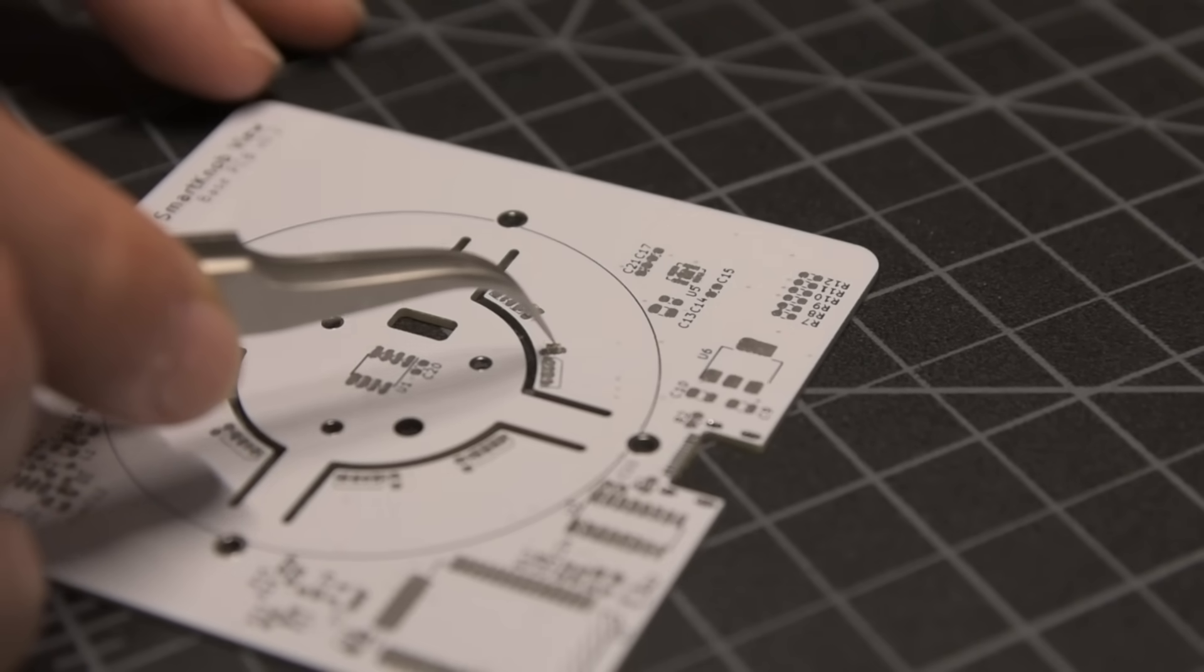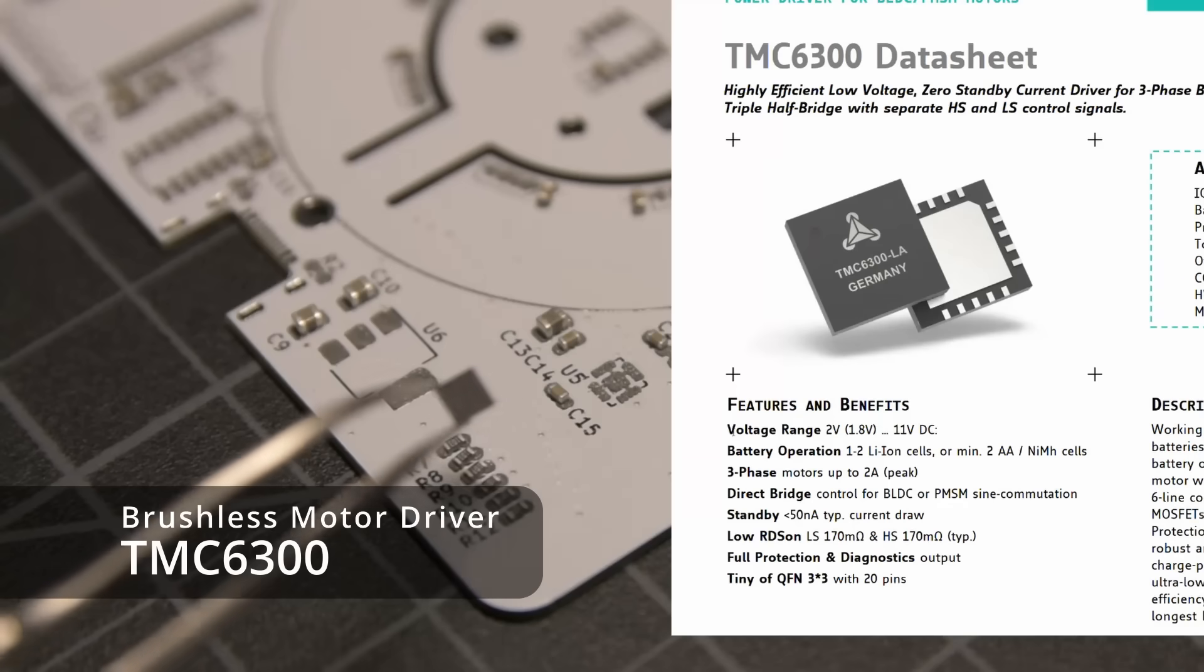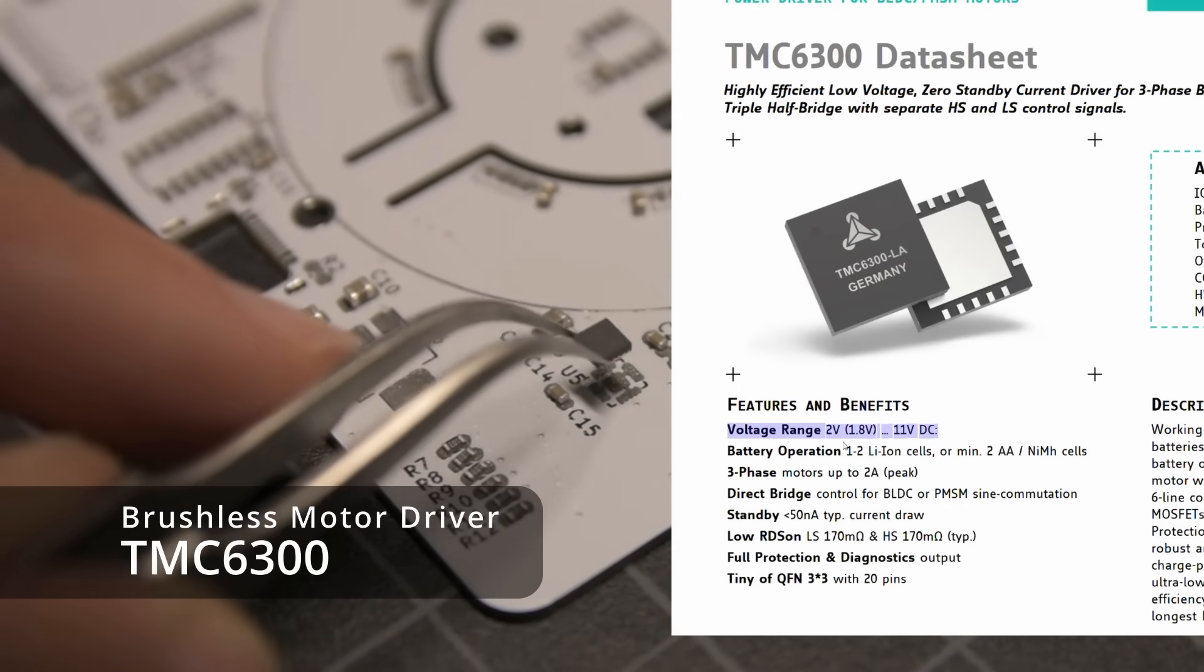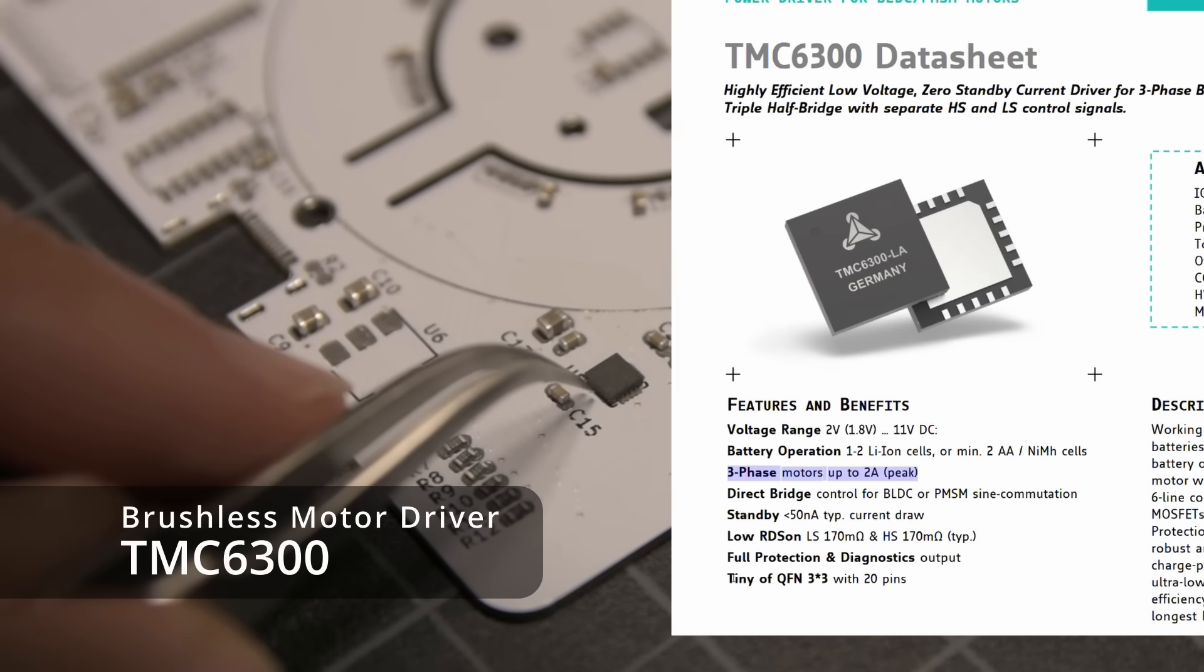To drive the brushless gimbal motor, I'm using a relatively new chip from Trinamic, the TMC6300, which is perfect for low voltage and low current brushless motors, though its size makes it a little tricky to assemble at home.